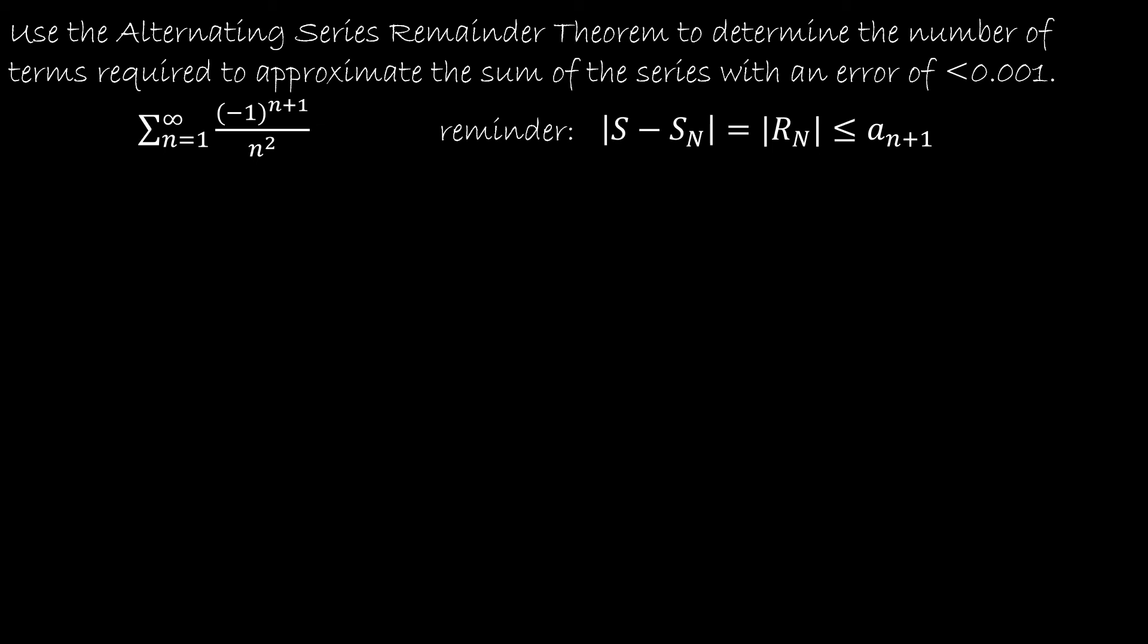Another application of the alternating series remainder theorem has to do specifically with this portion. And that is if we're asked to find the number of terms we would need to approximate the sum within a certain error. So the alternating series remainder theorem tells us that R sub n is less than or equal to a sub n plus 1. And in this case, remember that the a does not include the negative 1 value. So a sub n is 1 over n squared. Which means in this particular question, a sub n plus 1 is 1 over n plus 1 squared. Because I'm replacing n with n plus 1. I need that value to be less than 0.001.